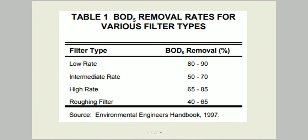Trickling filters can be classified based on rate of filtration as: low rate trickling filter, intermediate rate trickling filter, high rate trickling filter, and roughing filter. The BOD removal for a low rate filter is 80 to 90%, for an intermediate rate filter it is 50 to 70%, for a high rate trickling filter it is 65 to 85%, and for a roughing filter it is around 40 to 65%.